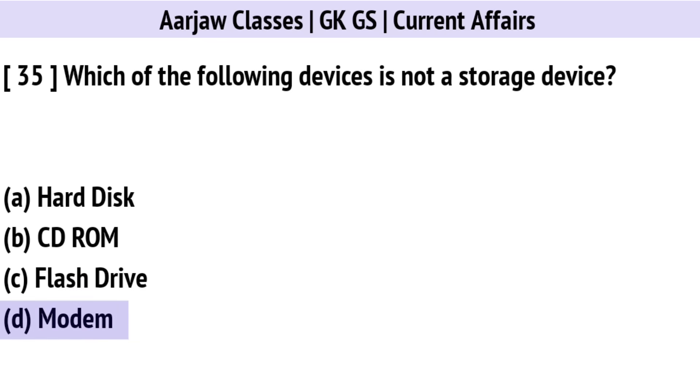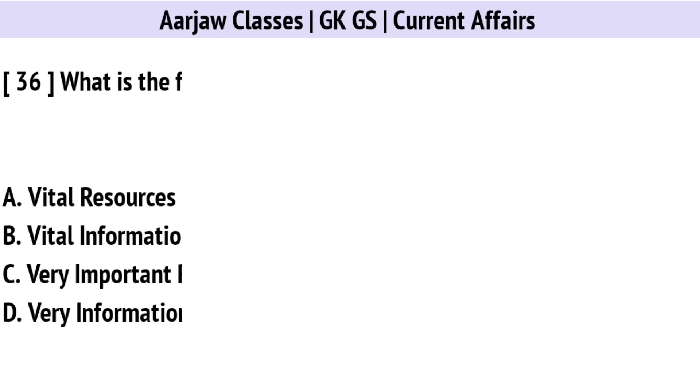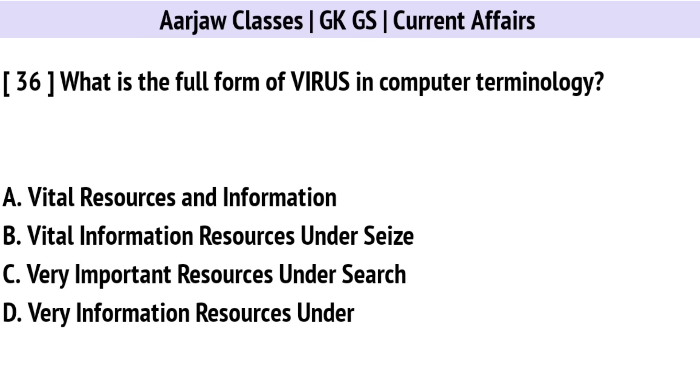Which of the following devices is not a storage device? The correct option is D: Modem.